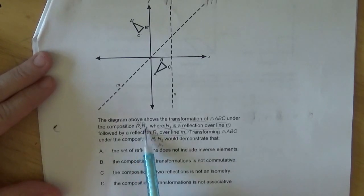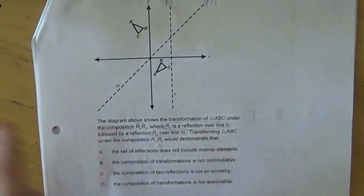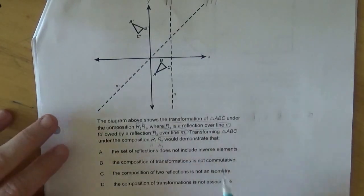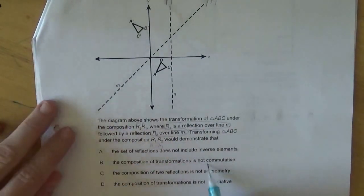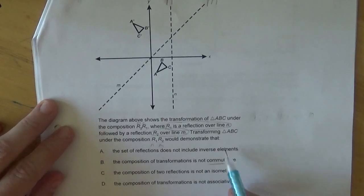If you're comparing R2 and R1 with R1, R2, you switched the order, right? So switching the order has to do with the commutative property, and the only one that has to do with the commutative property is B.